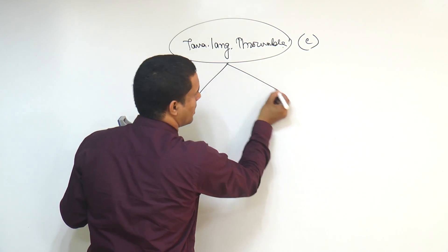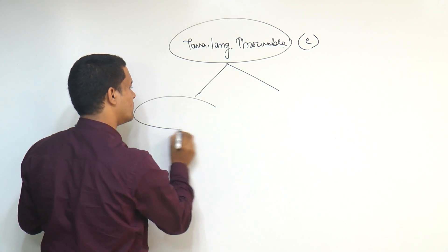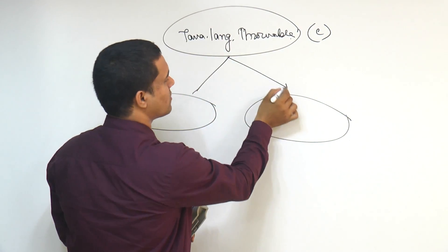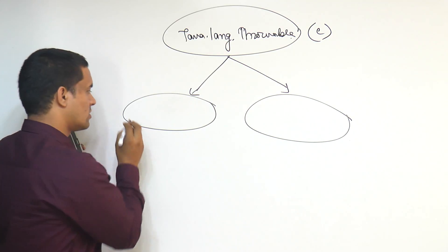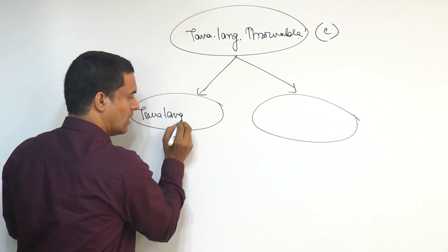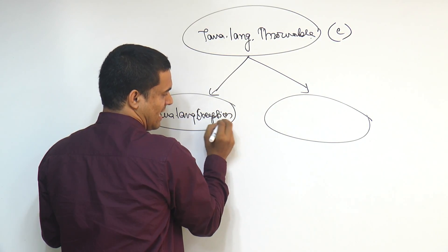After the Throwable, two things which we are getting. What two things we are getting now? Two problems as I was discussing, java.lang.Exception class.